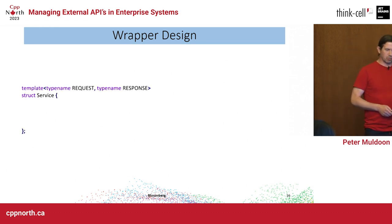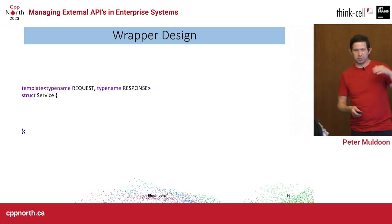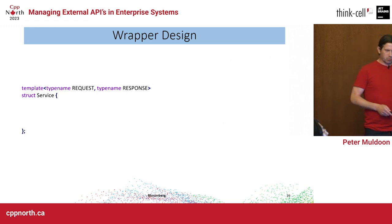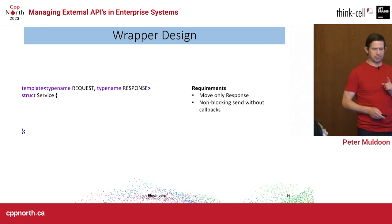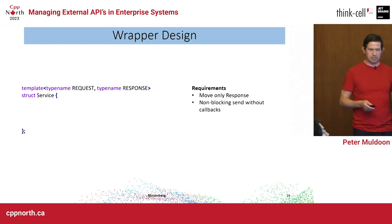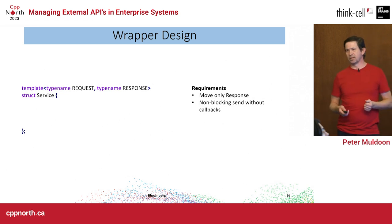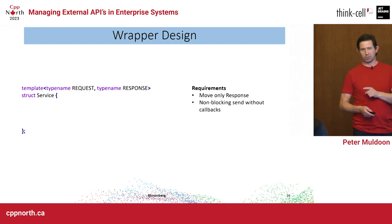I'm going to template the wrapper on request and response — there are many different requests in my system and this lets me genericize the code. What are my engineering requirements? First: the data that comes back can be very large, so I want to make sure it's not copied — or at least not inadvertently copied. It's going to be move-only. If you need to copy it you can, but you'll have to work hard at it — you won't be able to do it by accident.